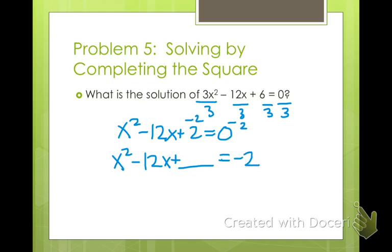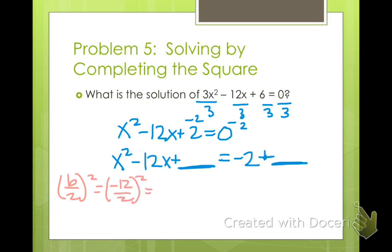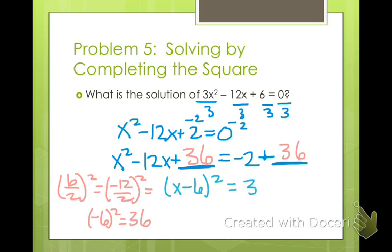Remember from the very beginning of Algebra 1 — what you do to one side of the equation, you must do to the other side. So if we're going to add a value over here, we also must add that value on the other side of the equal sign. In order to figure out what that value is, we do b over 2 squared. Our b is negative 12 over 2 squared, which is negative 6 squared, which is 36. So I'm going to add 36 to both sides. When I factor this, this is (x minus 6) squared equals 34.